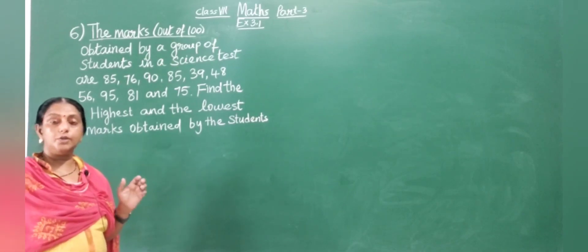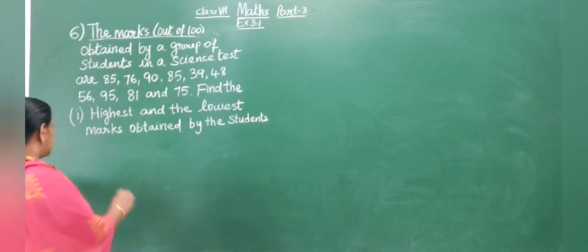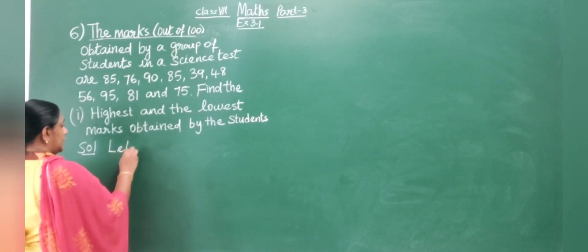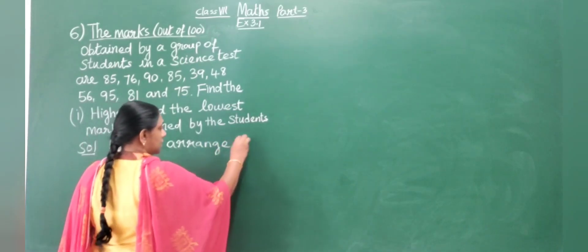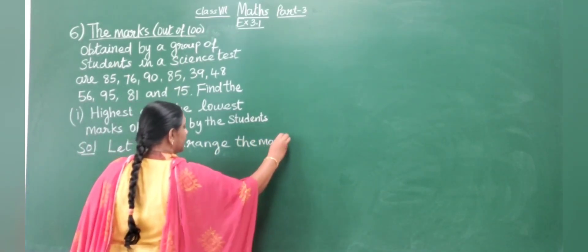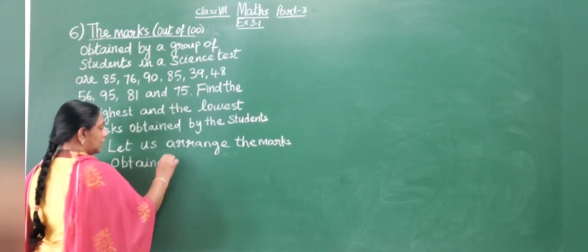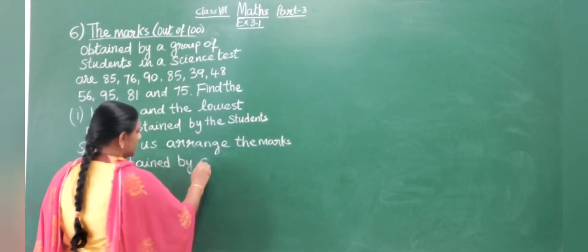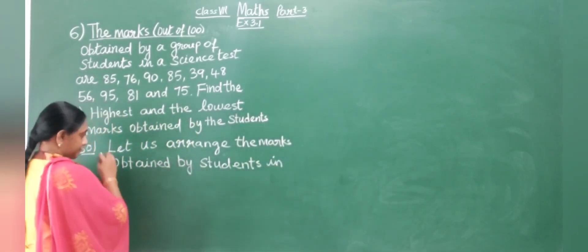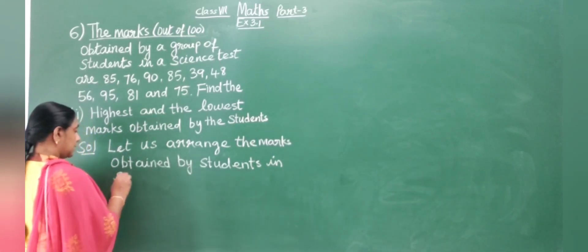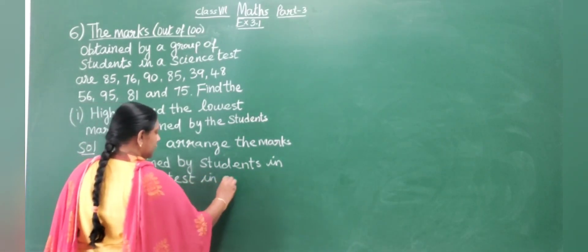First we will arrange them in ascending order. Then it will be easy to find out the highest and the lowest marks. So, let us arrange the marks obtained by students in the science test in ascending order.